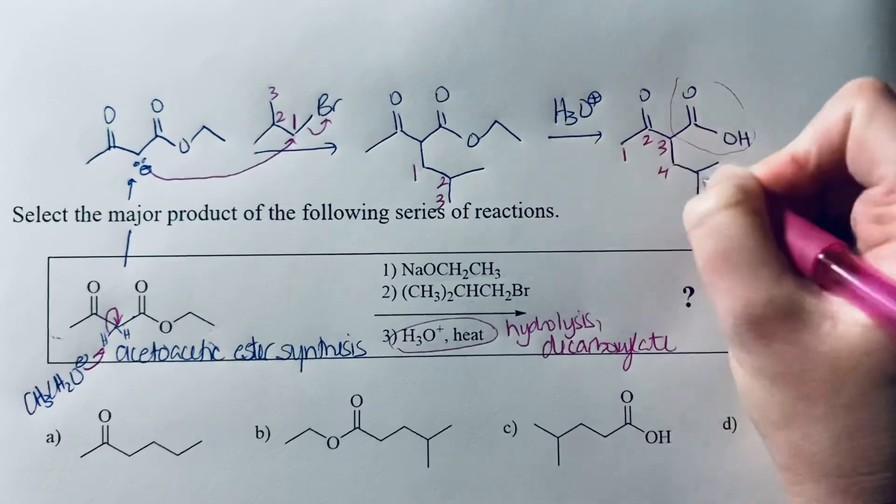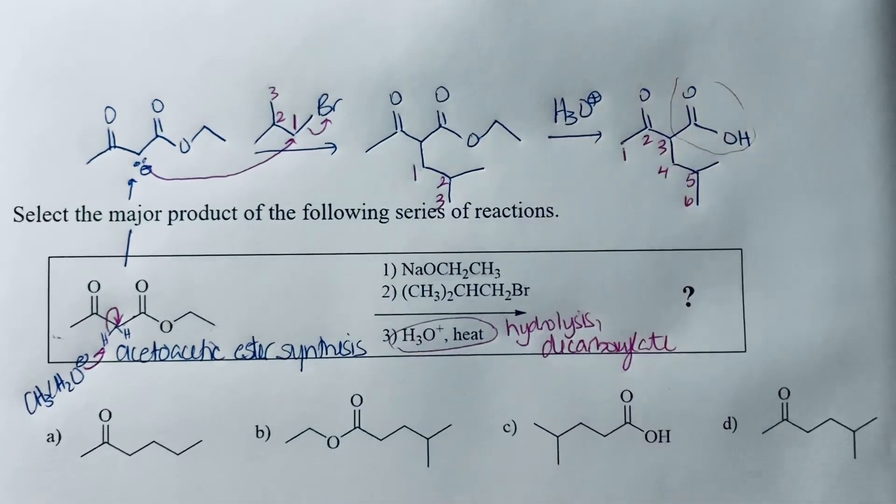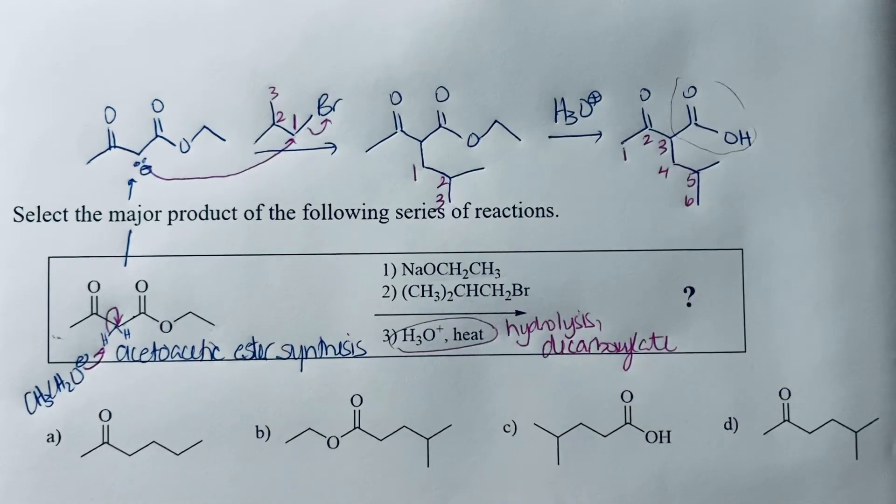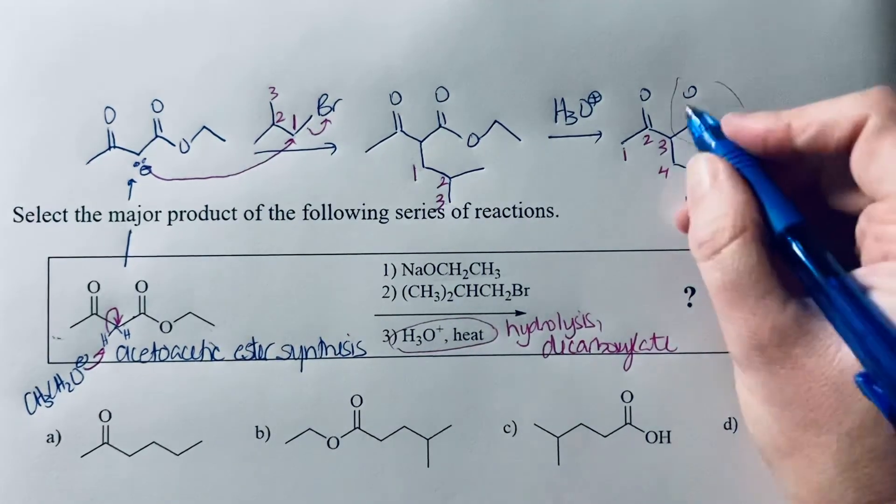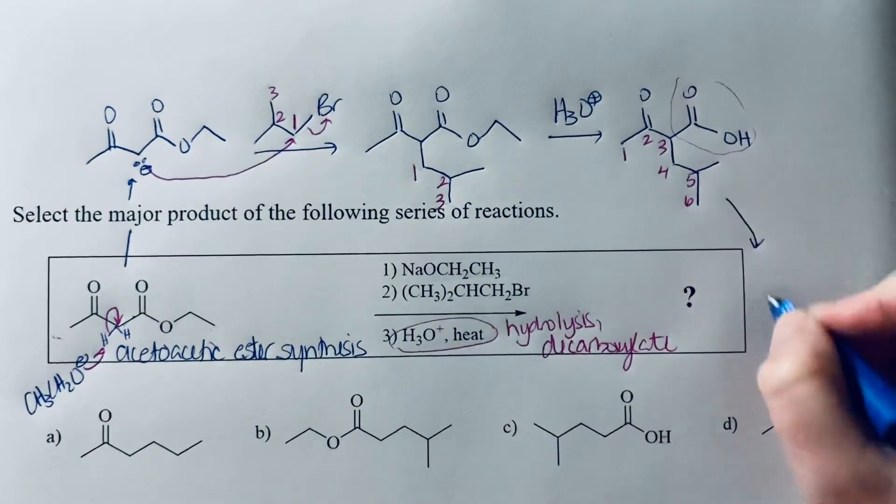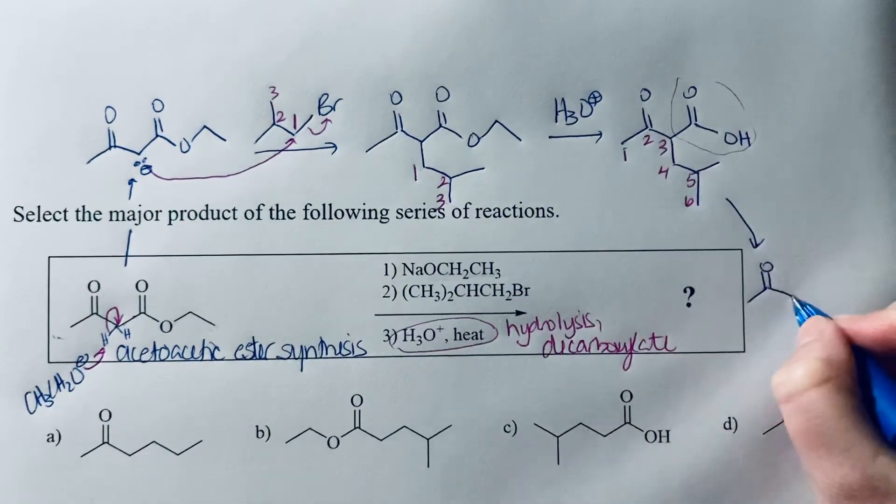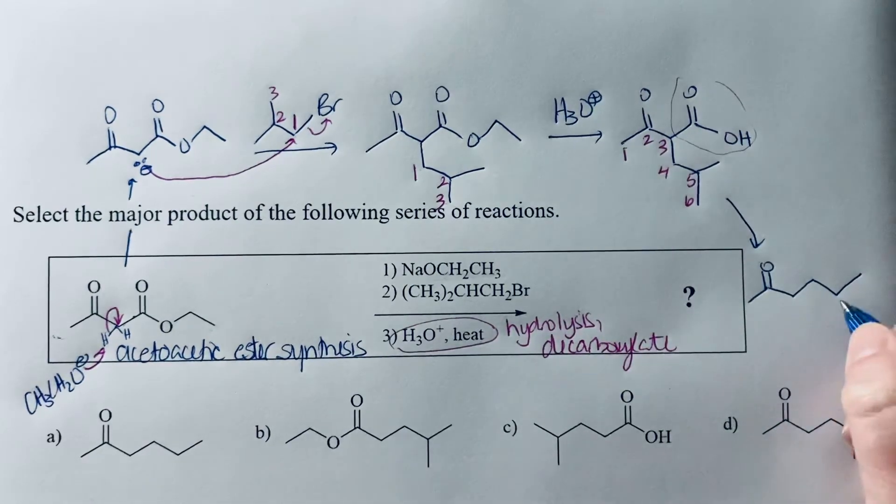Let's go ahead and number this entire chain now. So these three carbon atoms are now 4, 5, and 6 here. And so when you lose your CO2, you're just going to have that chain. So you're going to have your carbonyl. So carbons 1, 2, 3, 4, 5, 6 with that methyl group off of carbon 5.